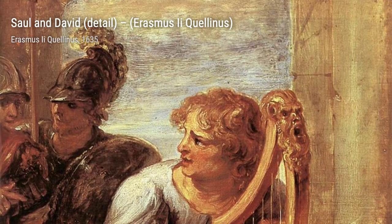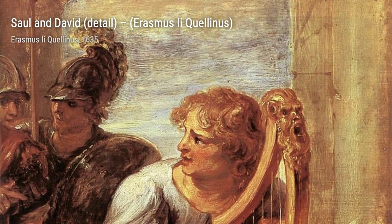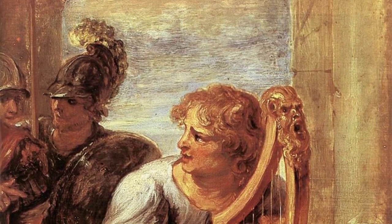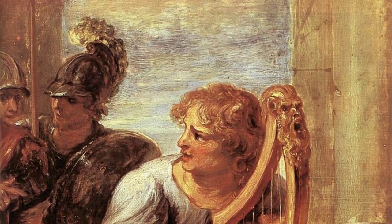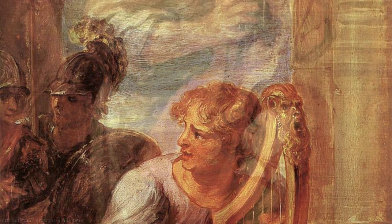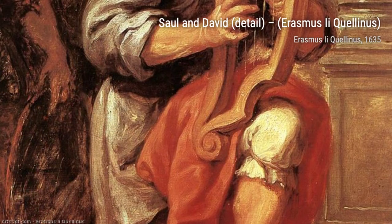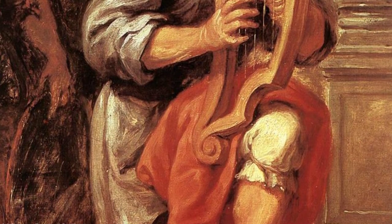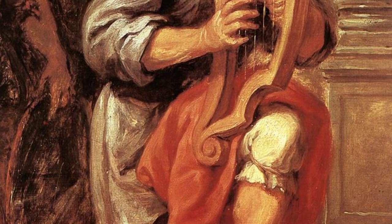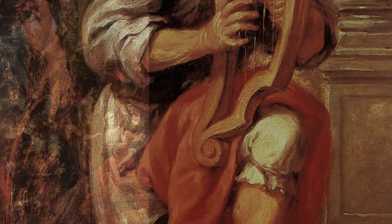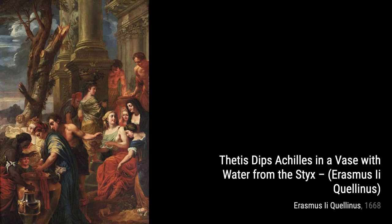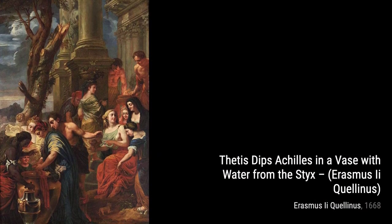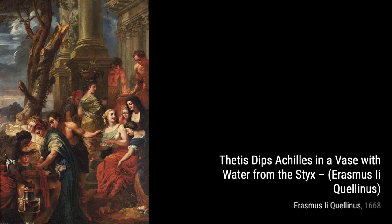Virgin with Child and Little Saint John portrays the Virgin Mary with baby Jesus and Saint John the Baptist, symbolizing the importance of innocence and purity. English Flower Garland with Immaculate Conception showcases a garland of flowers surrounding the Immaculate Conception, representing the beauty and holiness of the Virgin Mary.